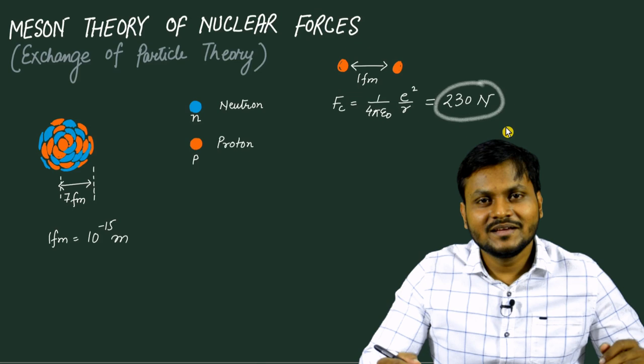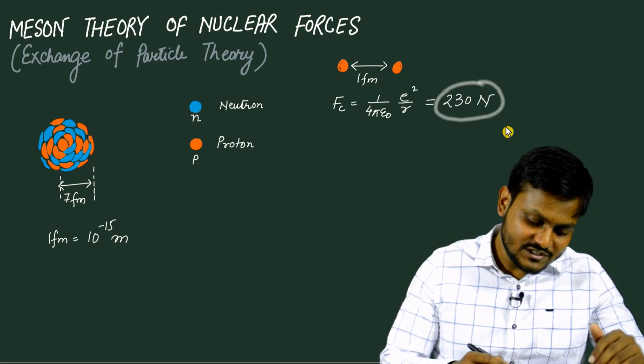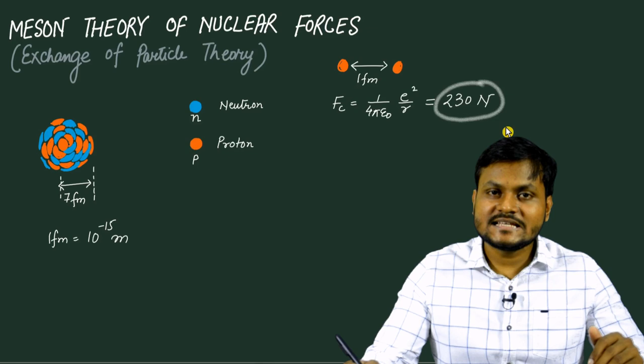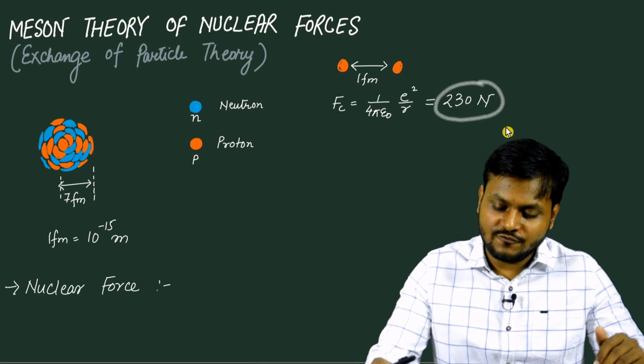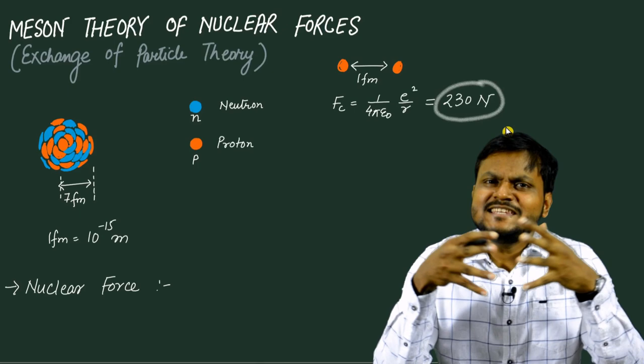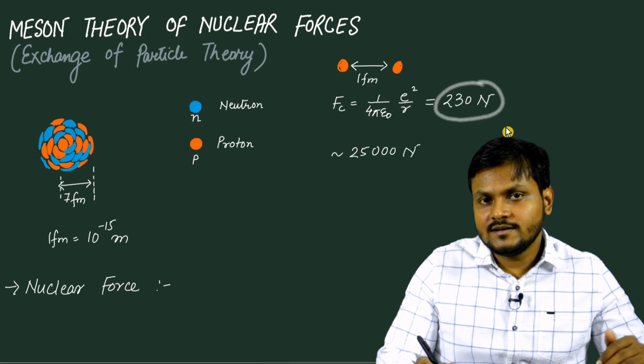So how is it possible that if two protons repel one another by a force of 230 newtons, they are still together inside the nucleus — and not just two, but many of them existing inside such a very tiny region in space? The reason is that there is another force apart from the repulsive force inside the nucleus, and that force is known as the nuclear force. At a distance of one femtometer between two protons, there exists not just a Coulomb repulsion of 230 newtons, but also a nuclear force which is attracting them. In fact, if you calculate the nuclear force between two protons at a distance of one femtometer, it turns out that the nuclear force is somewhere around 25,000 newtons — meaning it is 100 times more powerful than the repulsive force.